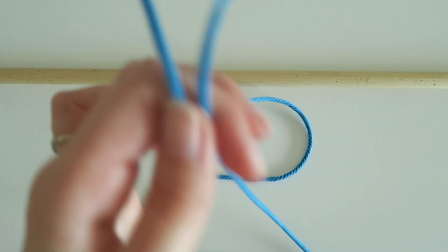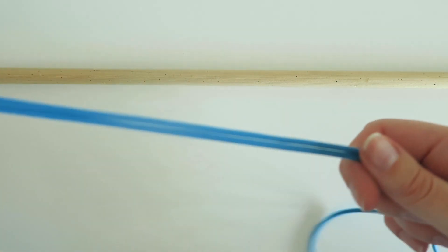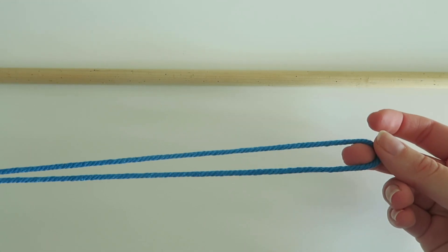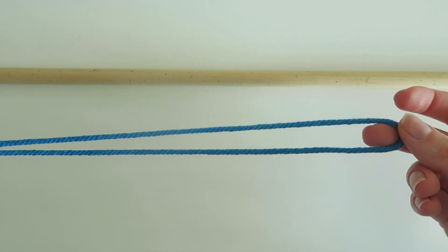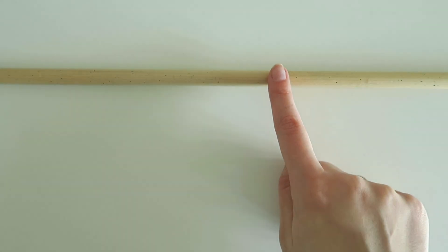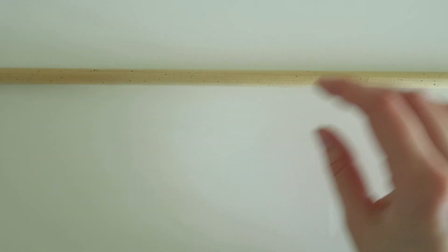What you need to do is grab your piece of string and fold it in half. So I've folded that in half and I have a dowel here which I'm going to tie my string onto, but you can use any other materials like I said, a wooden ring if you wanted to instead.